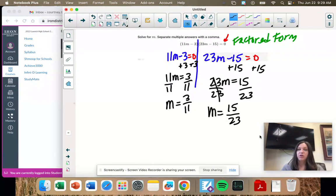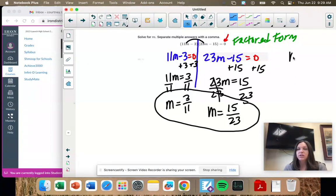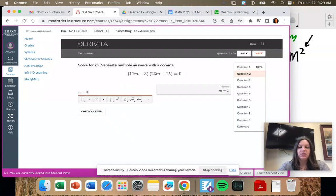And we're just going to leave it as fractions because it doesn't say to round. That means we want exact answers. So here's our two answers. We have two answers because it's a quadratic. If we were to multiply those, we would get an m squared. And that 2 tells us how many answers we're going to have. So 3 divided by 11 comma 15 divided by 23.